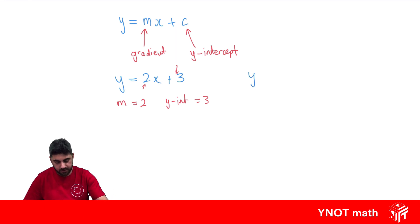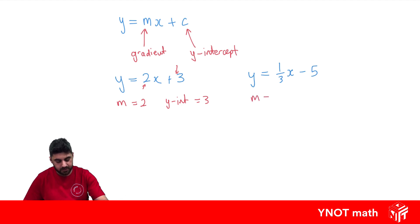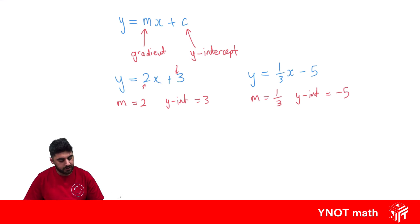What about the equation y equals a third times x minus 5? Well it's no different. The gradient is a third, because that's the number in front of x, and the y-intercept equals minus 5. There's no way to get the x-intercept straight from the equation, but if you do want the x-intercept, remember you can make y equal to 0 and solve the equation for x.